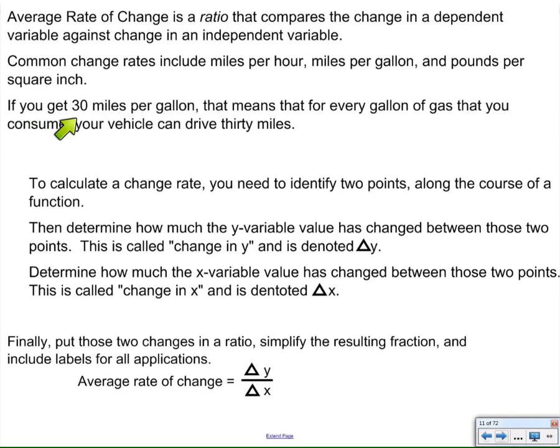These are common rates. So for example, if you get 30 miles per gallon, that means that every gallon of gas that you consume, your vehicle can travel 30 miles. So 30 miles for every one gallon driven.